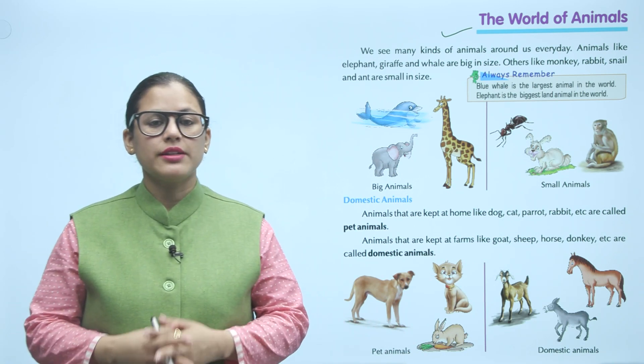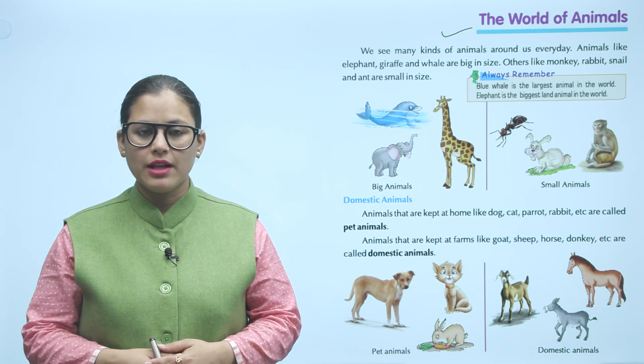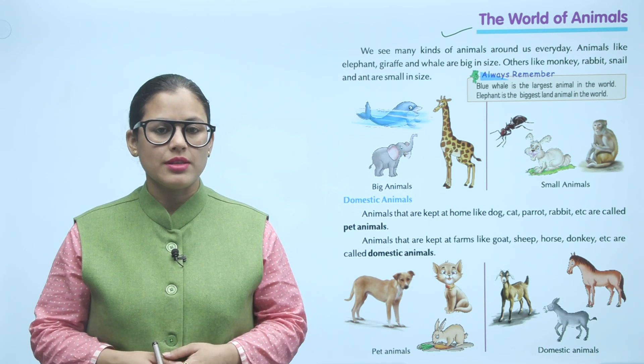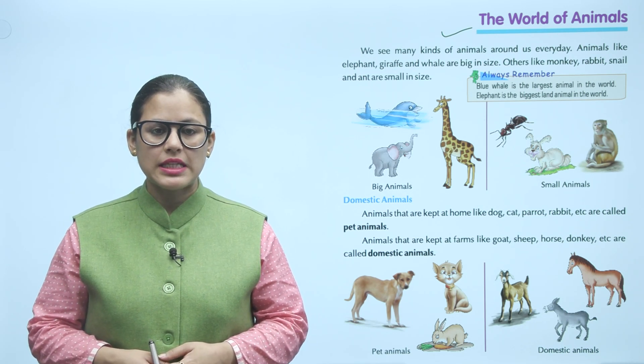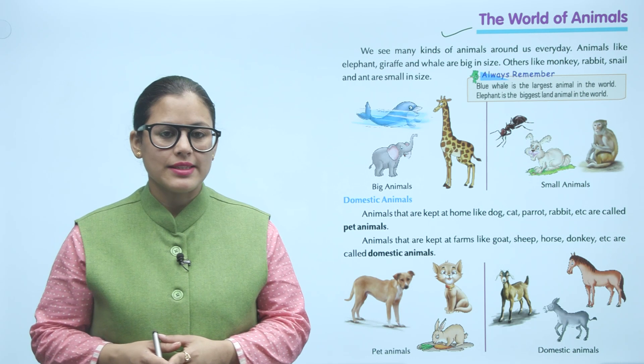We see many kinds of animals around us every day. Animals like elephant, giraffe and whale are big in size. Others like monkey, rabbit, snail and ant are small in size.